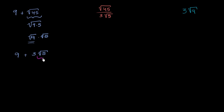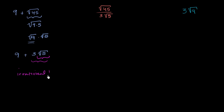The square root of 5 is irrational — you're taking the square root of a non-perfect square, so it's irrational. 3 is rational, but the product of a rational and an irrational is still irrational. And then you're adding 9, a rational number, to that irrational. Adding a rational to an irrational still gives you an irrational. So this whole expression is irrational.